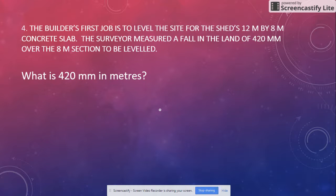The builder's first job is to level the site for the shed's 12 meter by 8 meter concrete slab. The surveyor measured a fall in the land of 420 millimeters over the 8 meter section to be leveled. What is 420 millimeters in meters? If we move our decimal place once we get centimeters, and if we move it two more times we get meters. So it's 0.42.